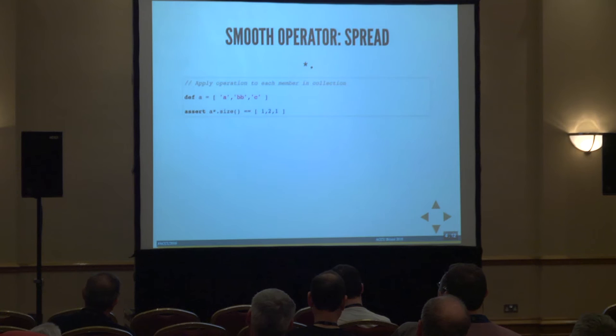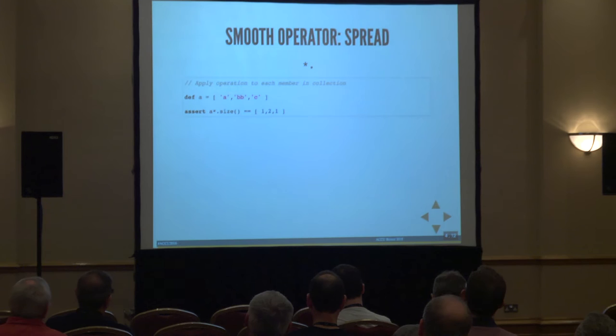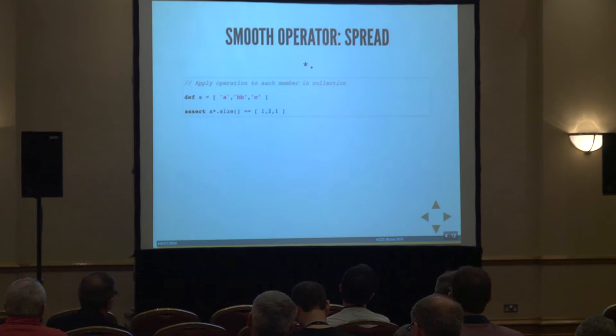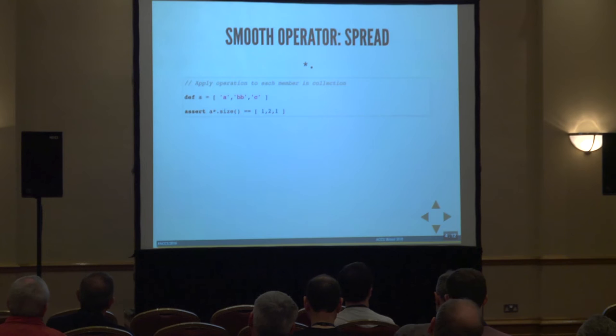Another feature is the spread operator — a short way of doing a for-each. If I have a list of items and I want to perform an operation on each of them, I just do star-dot something. For example, star-dot-size gives me a new array with that operation performed on every element. It's a very quick way of operating on a list and applying an operation to everything.